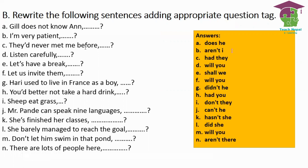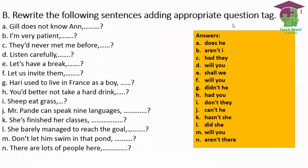For 'Let's have a break' — since this is 'let's' involving both speaker and listener, the tag is 'shall we?' You can see all answers from A to N in the right-hand side box. Remember: 'let us' means permission is sought from the listener, so the tag is 'will you', while 'let's' as an offer or suggestion uses 'shall we'.